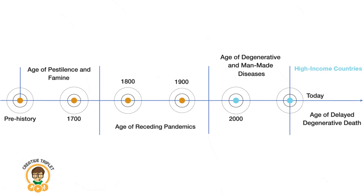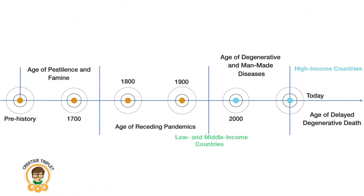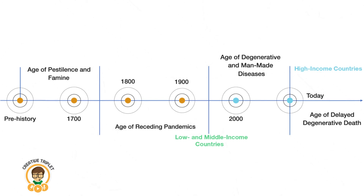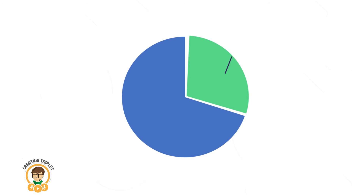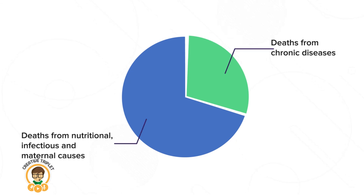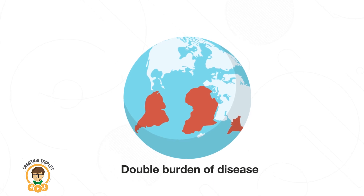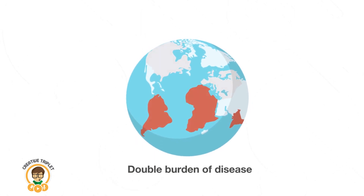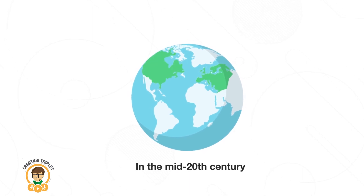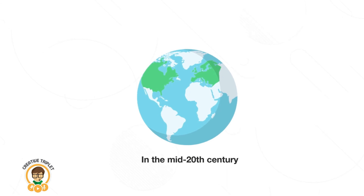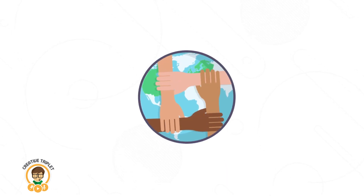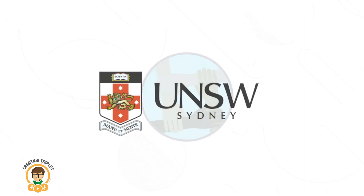While these high-income countries are currently in the fourth phase of the epidemiological transition, low- and middle-income countries are at different stages of the transition. Many are currently shifting from the age of receding pandemics to the age of degenerative and man-made diseases, resulting in what is known as the double burden of disease. This means that some countries are still trying to control a high number of deaths from infectious, nutritional and maternal causes, while also trying to combat a growing number of deaths from chronic disease. The double burden of disease is currently a major health challenge in many countries. Since the high-income countries have already passed the double burden of disease era in the mid-20th century, experiences and lessons learned from this time may be used to help low- and middle-income countries manage the epidemiological transition.